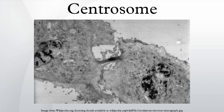Some cell types arrest in the following cell cycle when centrosomes are absent, though this is not a universal phenomenon. When the nematode C. elegans egg is fertilized, the sperm delivers a pair of centrioles. These centrioles will form the centrosomes which will direct the first cell division of the zygote and this will determine its polarity. It is not yet clear whether the role of the centrosome in polarity determination is microtubule-dependent or independent.